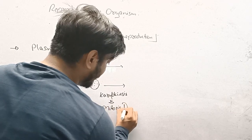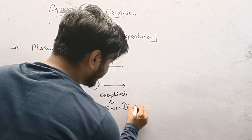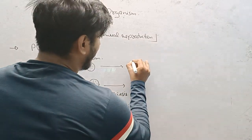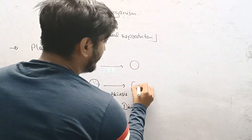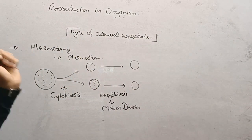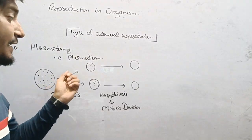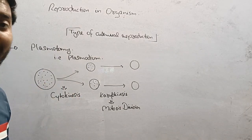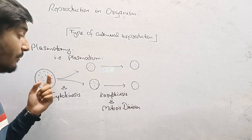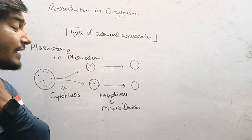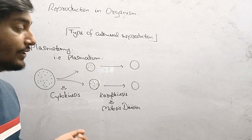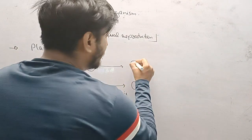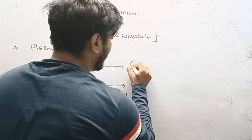When it undergoes karyokinesis, it divides the nucleus based on the number of nuclei present in the parent body. The parent body contains 18 nuclei, but this cell does not contain 18 nuclei. It divided into two categories, so they undergo mitosis and form 18 nuclei, same as the parent cell.